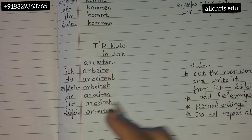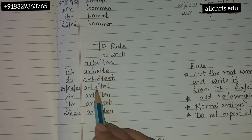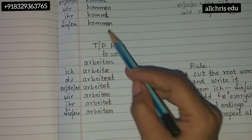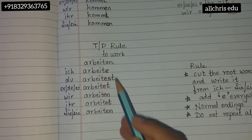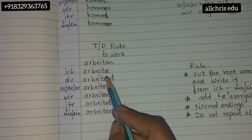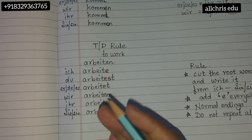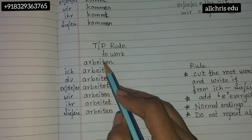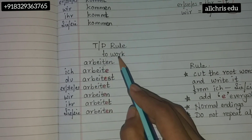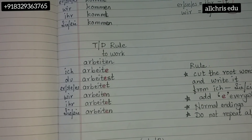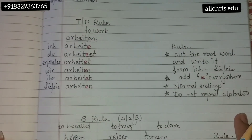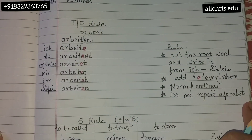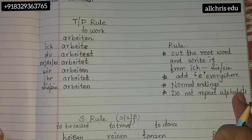For the T/D Rule, the starting root remains same but an extra 'e' comes everywhere — written in red. The endings are the same as normal rule but this extra 'e' is added. You can recognize a T/D rule verb because when you cut 'en' from the original form, the word ends with 't' or 'd.' This concept is already taught; you are just supposed to write the rule chart.